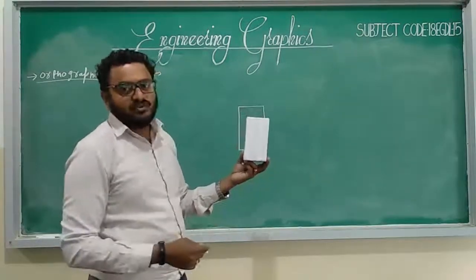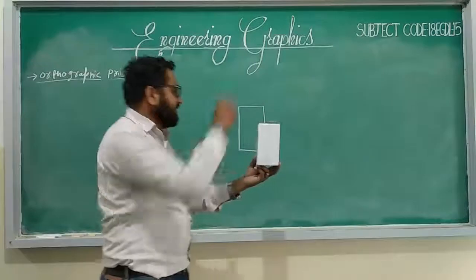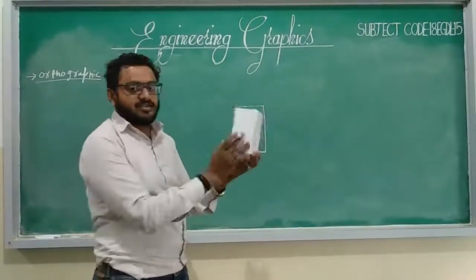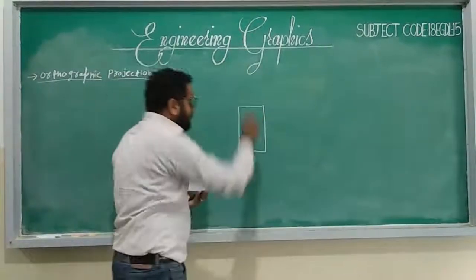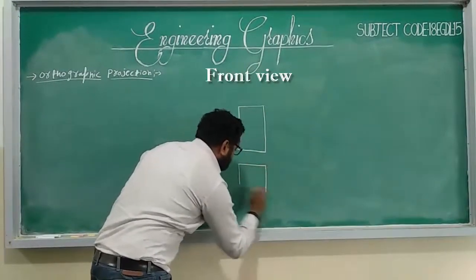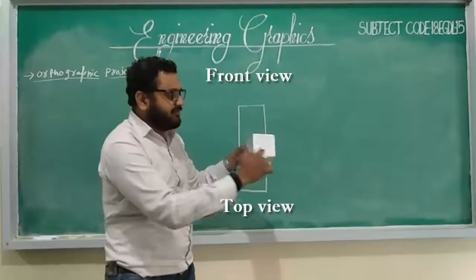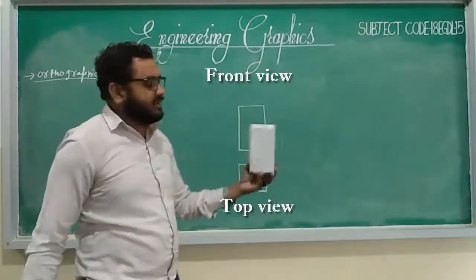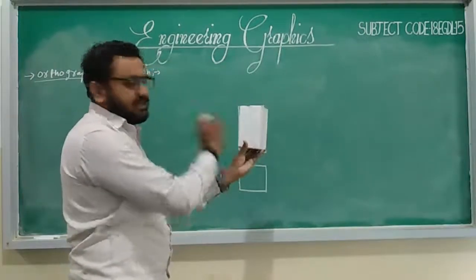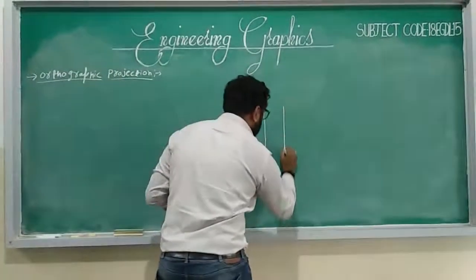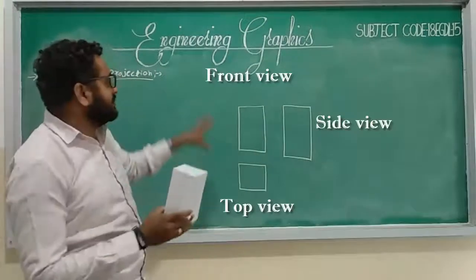If you want to get the width, you need to see the object from the top — the top view. For a square prism, when you see it from the top, only the top face is visible and it looks like a square. For the side view, when you see the prism from the side, it looks like a rectangle. This demonstrates how orthographic projection gives us different information from each view.